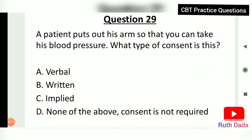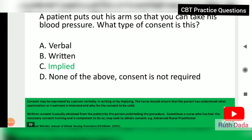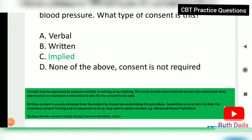Question 29: A patient puts out his arm so that his blood pressure can be taken. What type of consent is this? That is implied consent. Consent may be expressed verbally, in writing, or by implication. The nurse should ensure the person has understood what examination or treatment is intended and why.